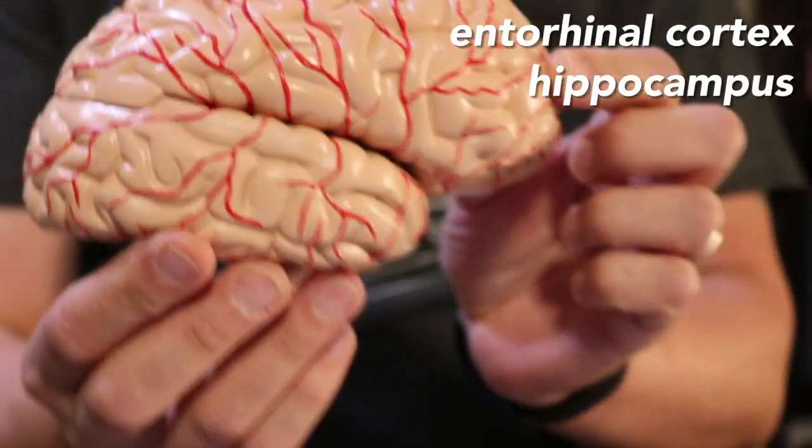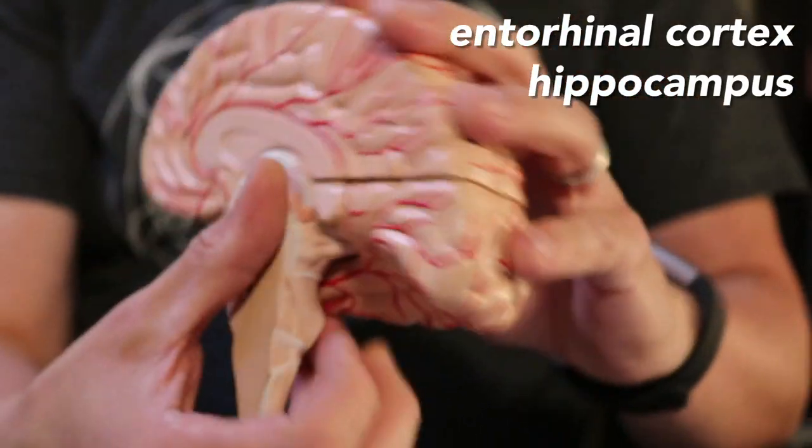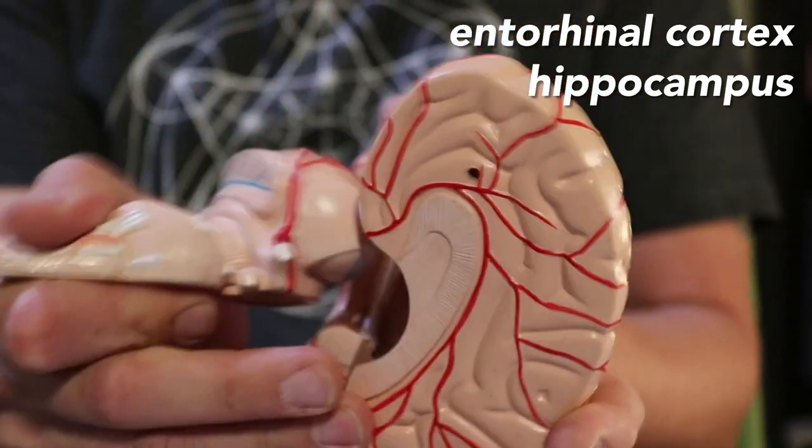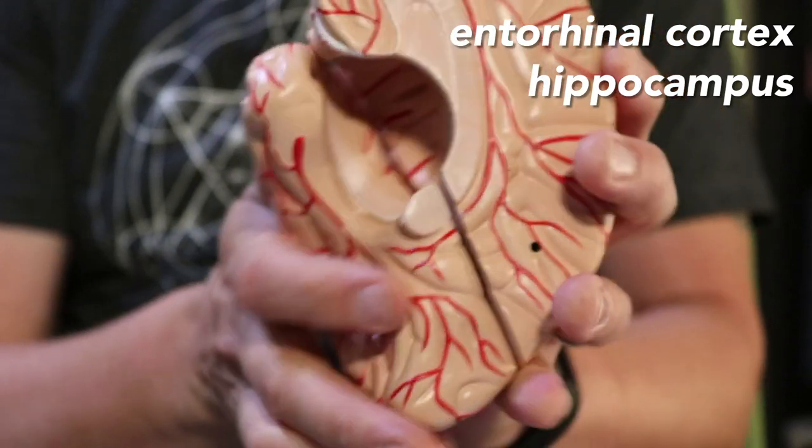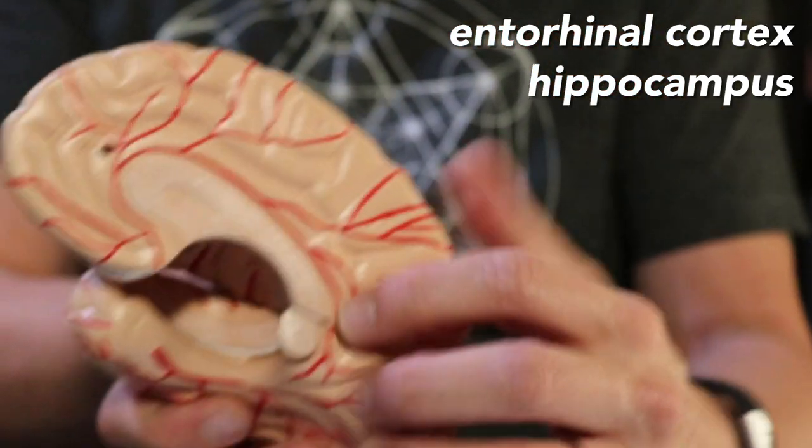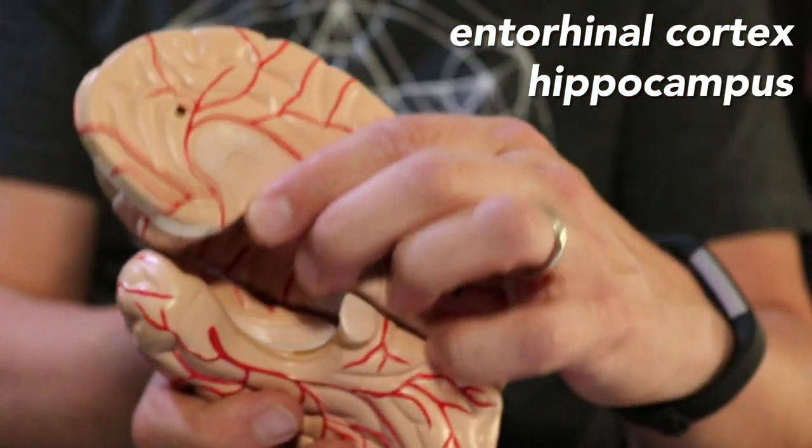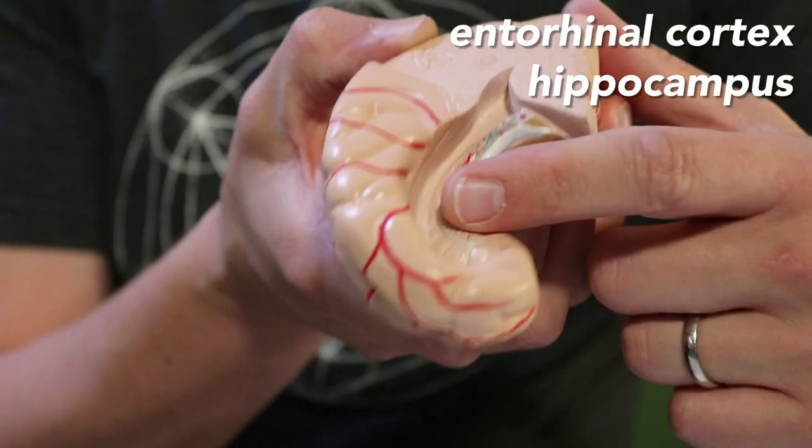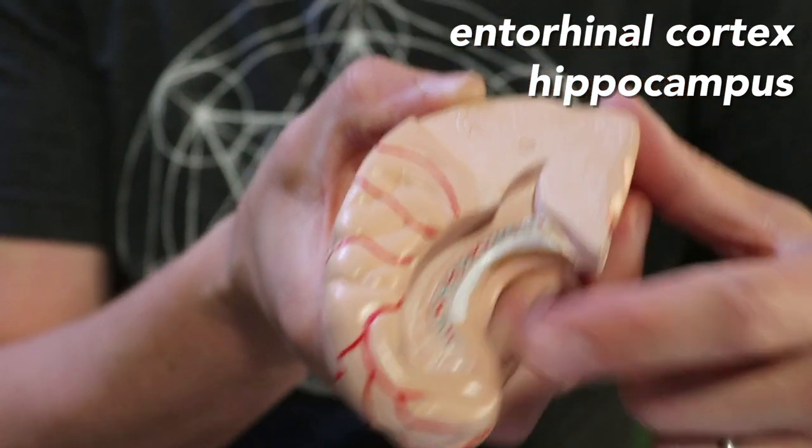Grid cells and place cells live in structures called the entorhinal cortex and the hippocampus, respectively. So here is half of your neocortex, half of your brain, minus the cerebellum. I'm going to pop out this whole old midbrain part of the brain. I'm going to show you where the entorhinal cortex is. It is right here. And if you pop this open, you can even see the hippocampus right along inside. You've got two of these, one on either side of your brain.